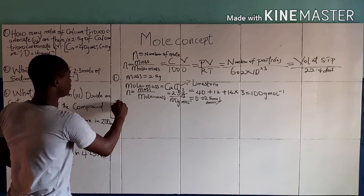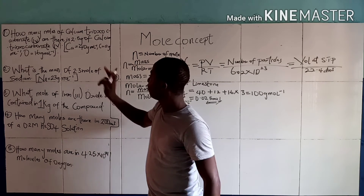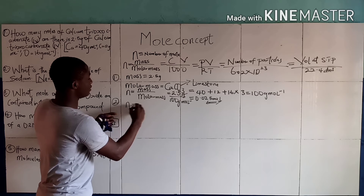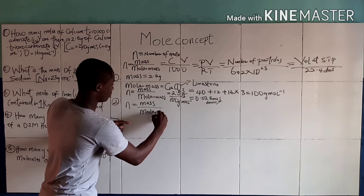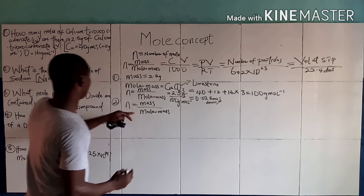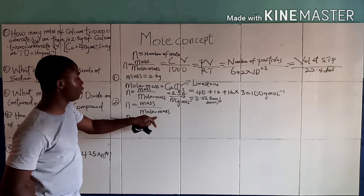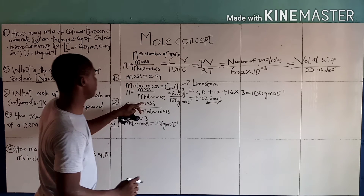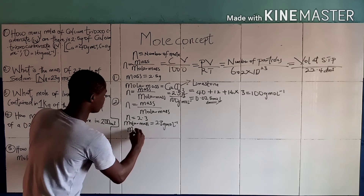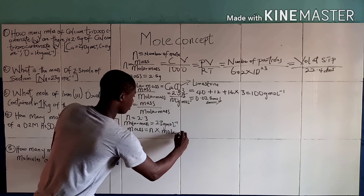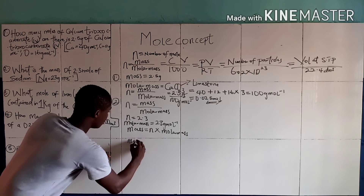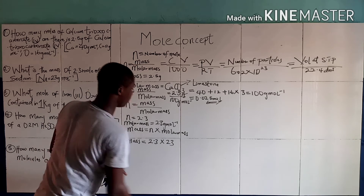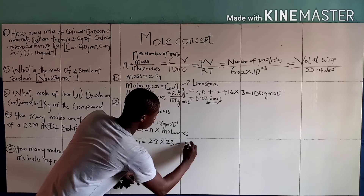Question 2 says: what is the mass of 2.3 moles of sodium? We know the formula is N equals mass over molar mass. We are given N as 2.3 moles, and the molar mass of sodium is 23 grams per mole. Making mass the subject of the formula, mass equals N times molar mass, which is 2.3 times 23, giving us 52.9, approximately 53 grams of sodium.